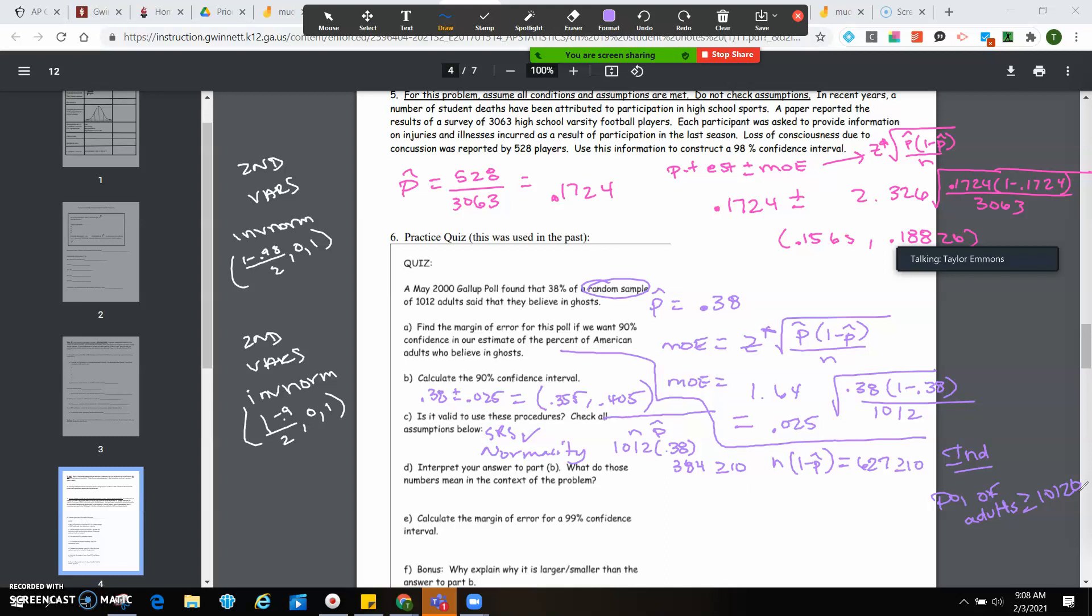Interpret your answer to part B. What do those numbers mean in context of the problem? Remember, this is what you write out when it says the word interpret. This is exactly what they're looking for. I, being me, am 90% confident that the true proportion lies between 35.8% and 40.5% for those who believe in ghosts. It's the same every single time. You got to say your confidence. You got to say the interval and you got to say in what context.